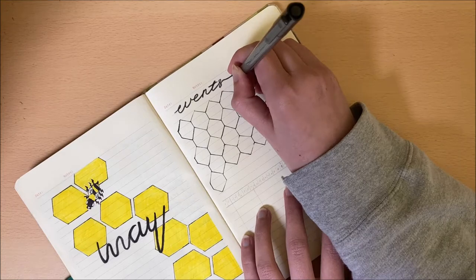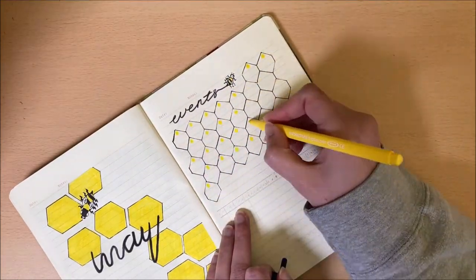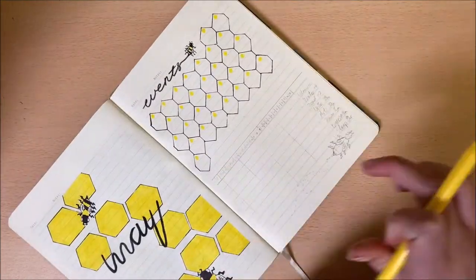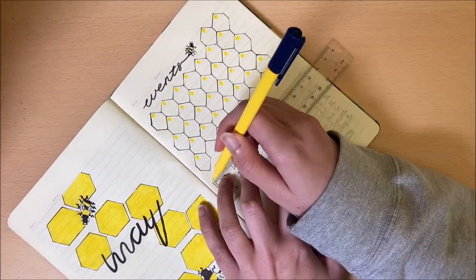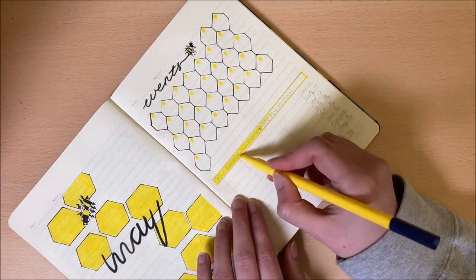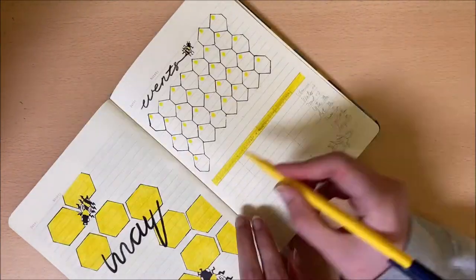So I've added 31 different honeycomb cells for each of the 31 days in May and I quickly went back in with the same yellow marker which you will see throughout a lot of this week's video, and I've added a habit tracker down below.